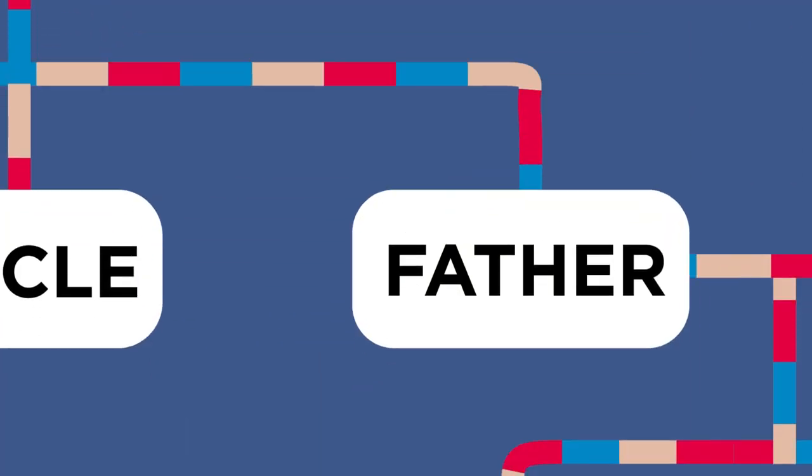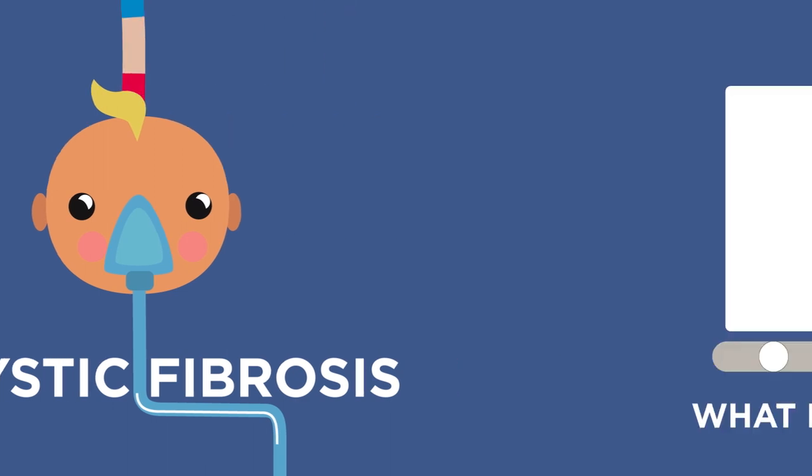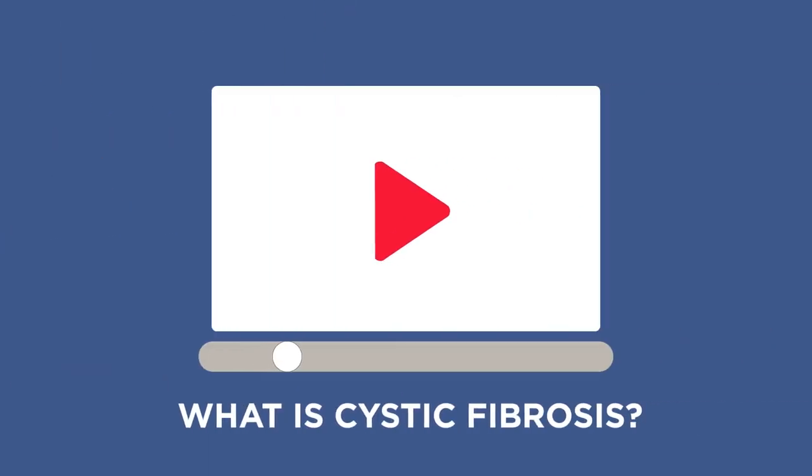Another example of an inherited disorder is cystic fibrosis. If you want to discover more about cystic fibrosis and how it affects the body, then watch this video.